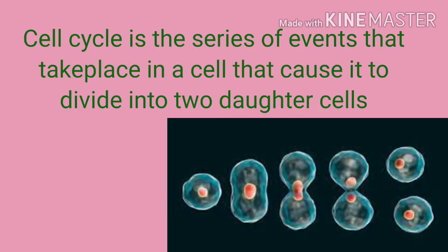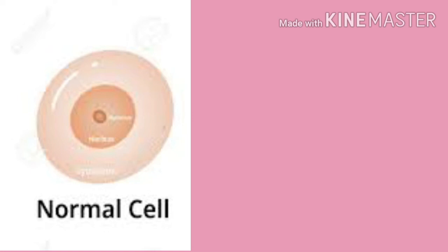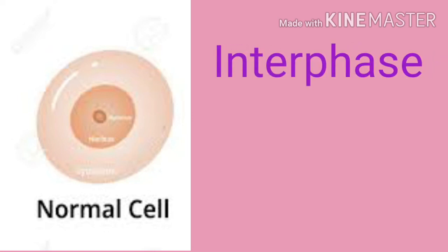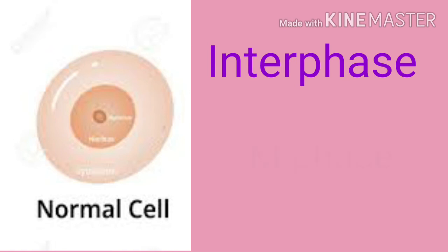The cell cycle, or cell division cycle, is the series of events that takes place in a cell that causes it to divide into two daughter cells.